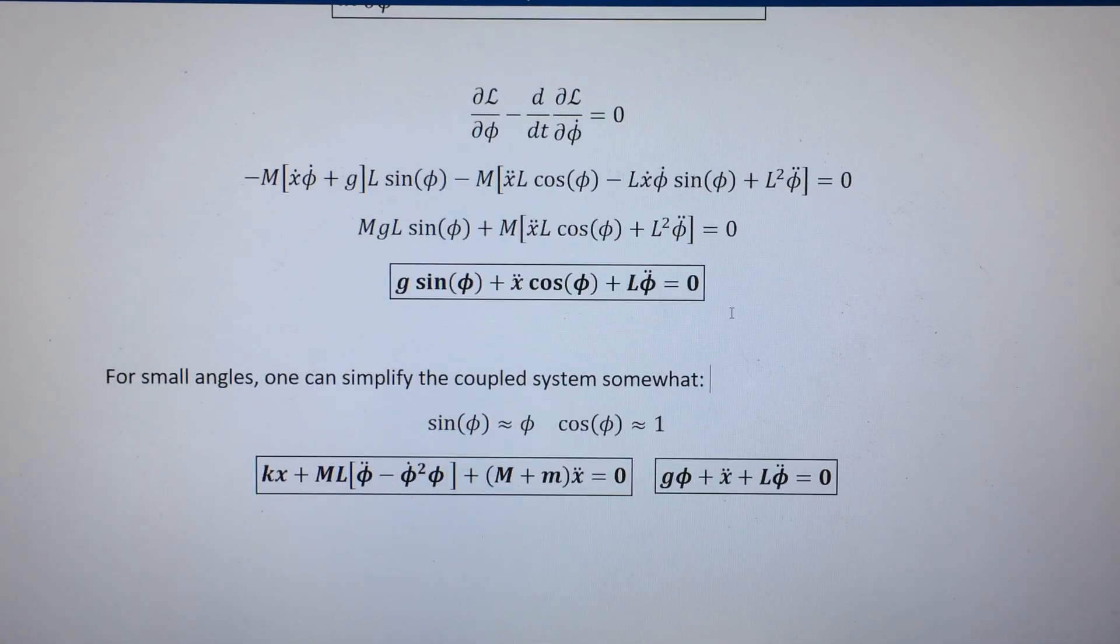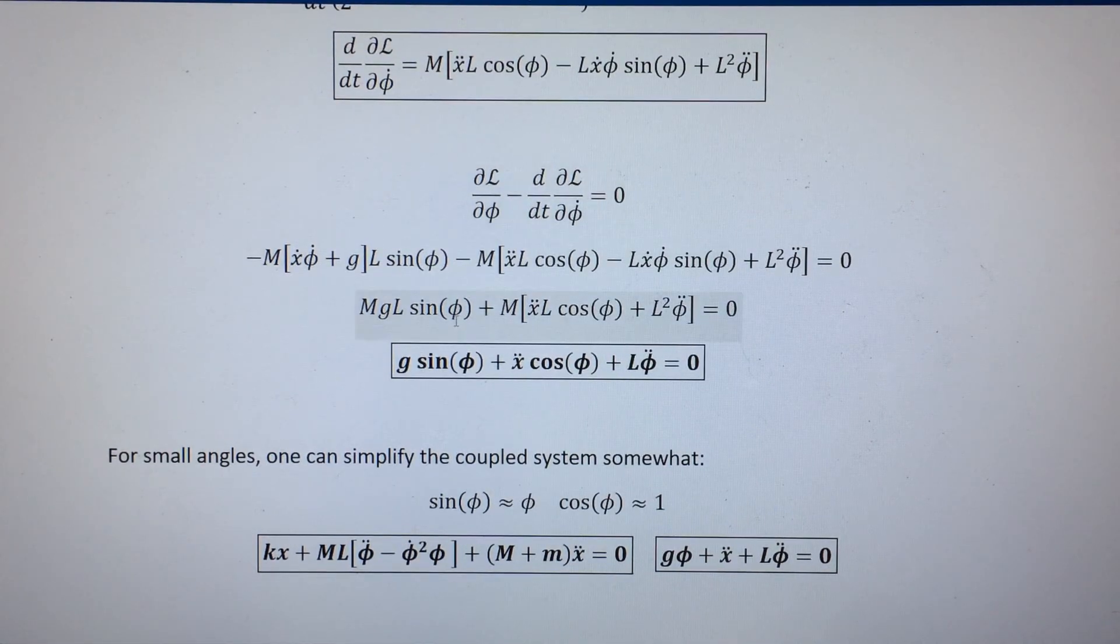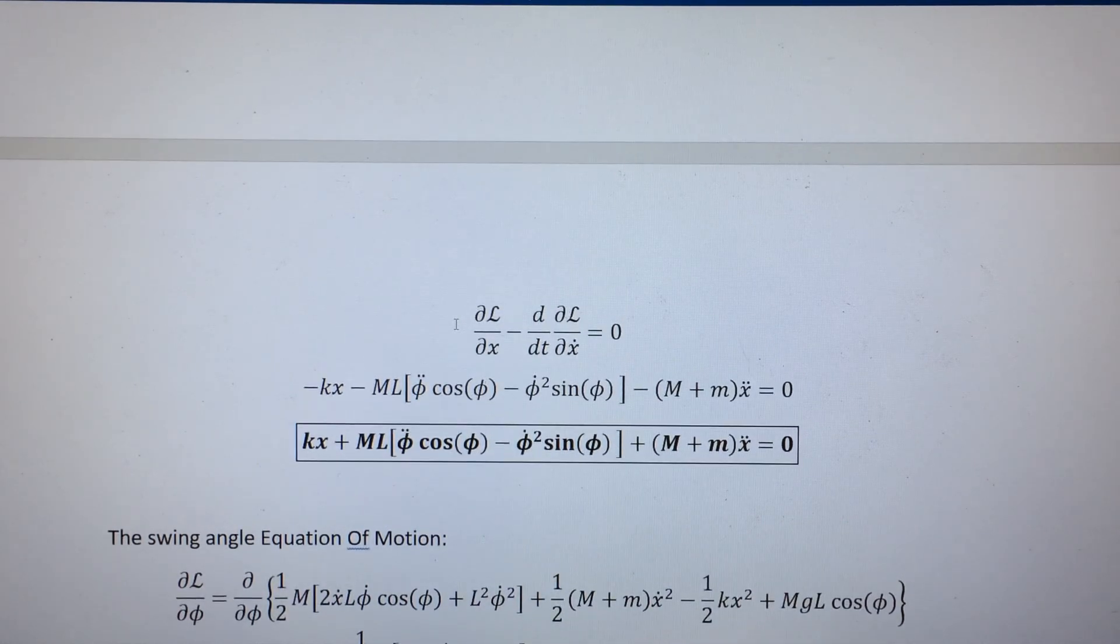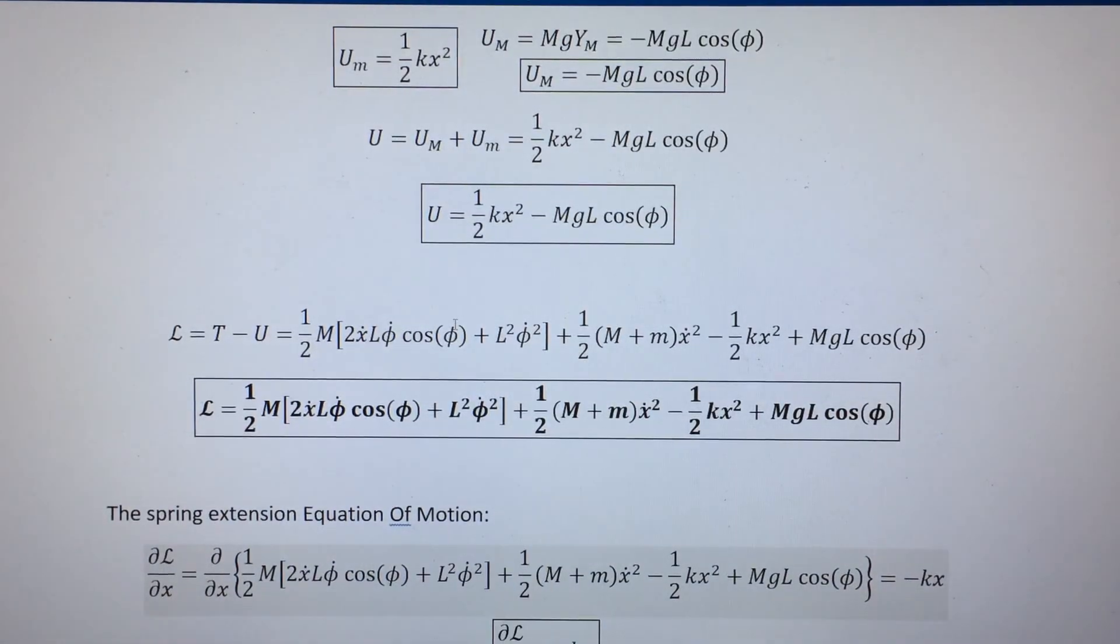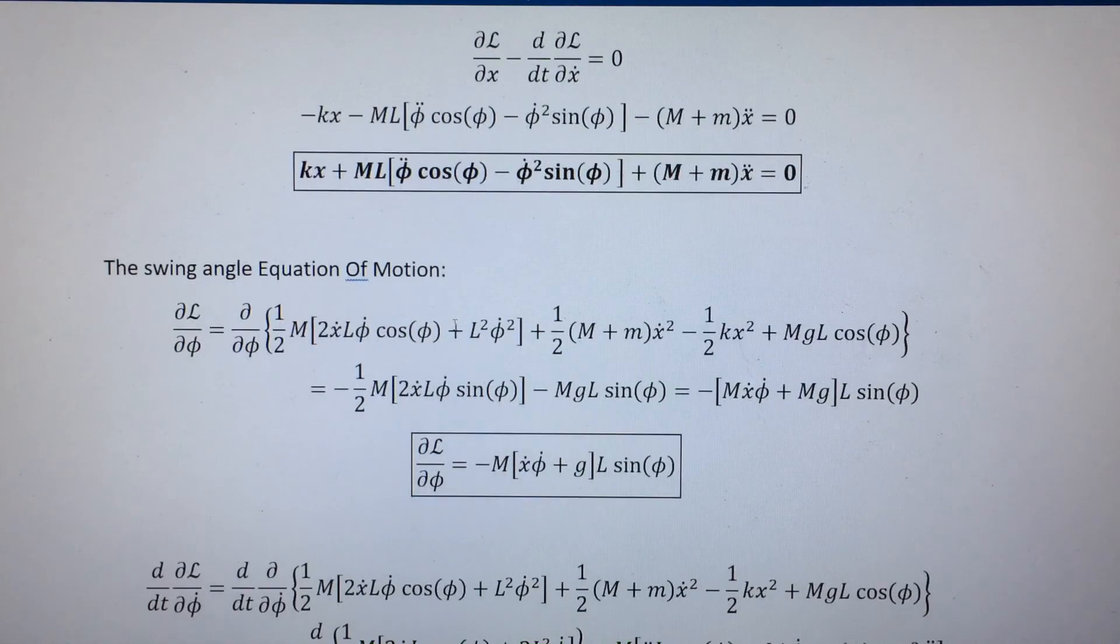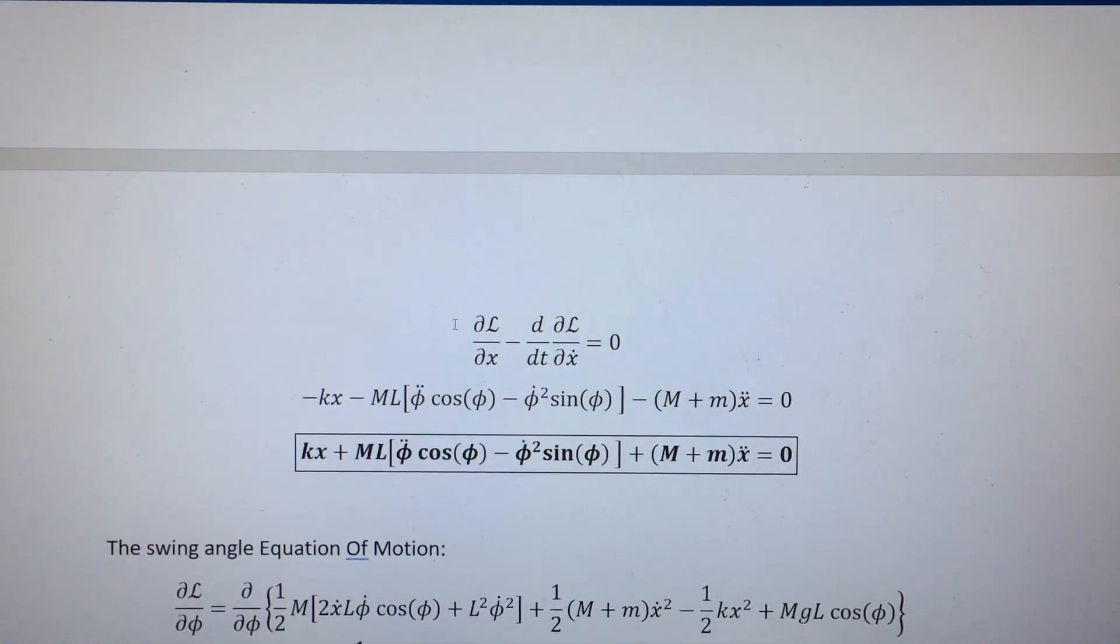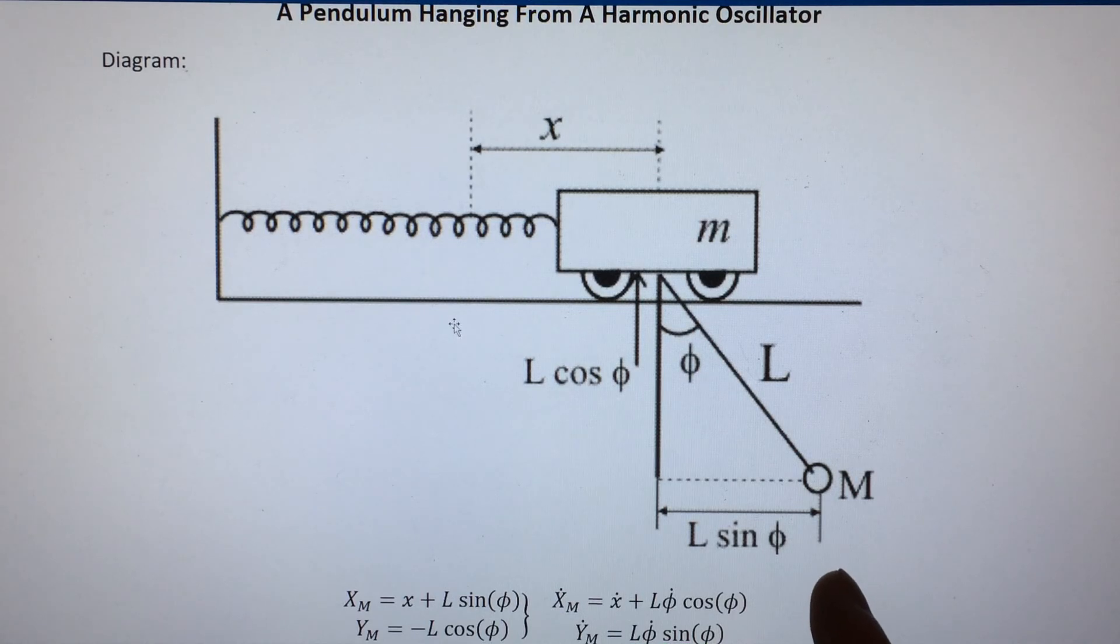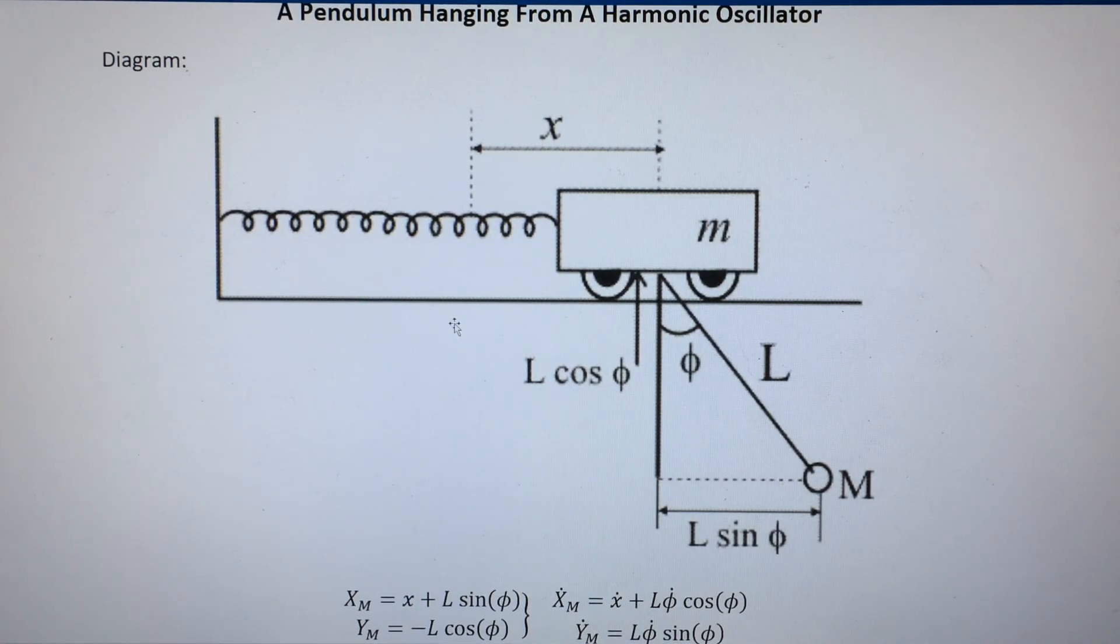That is how you use Lagrangian mechanics to do the otherwise rather non-trivial task of deriving the equations of motion. Perfect in the sense that it's the correct answer, but not ideal in that it's still a somewhat complicated answer. Regardless, that is how you use Lagrangian mechanics to derive the equations of motion for a system consisting of a pendulum attached to the mass of a massive harmonic oscillator.